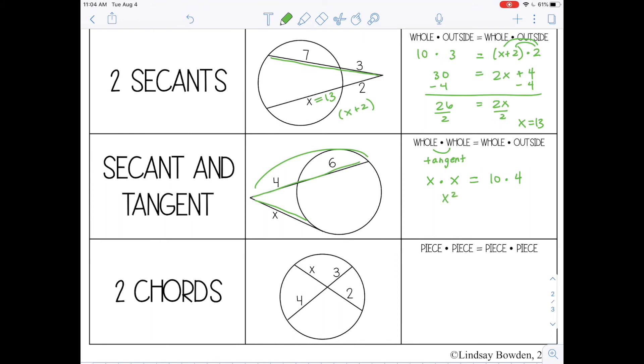All right, so x times x is x squared. 10 times 4 is 40. I'm going to take the square root of both sides. And I'm going to round to the tenths place, so 6.3.